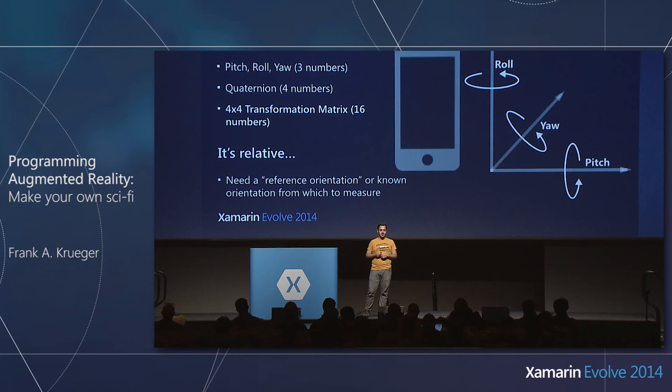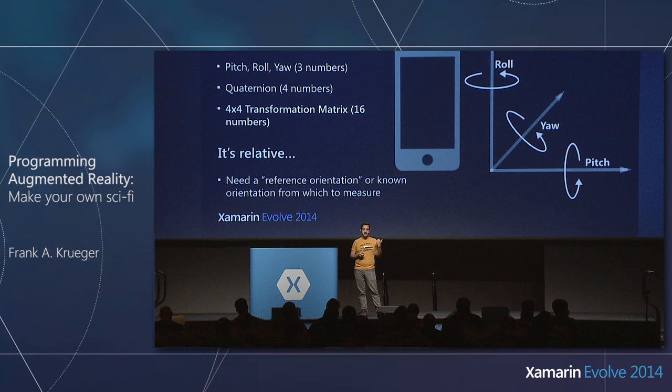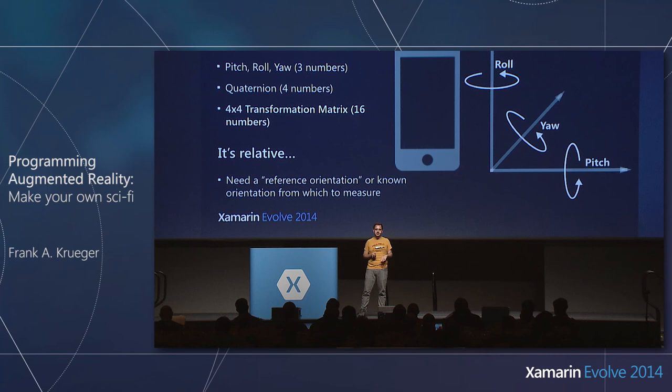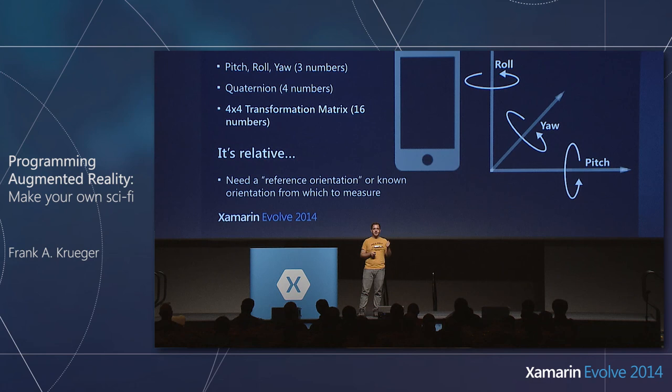Thankfully, iOS introduced Core Motion, which is fantastic. It gets around the accuracy issue by combining not just one sensor but three: the accelerometer, a magnetometer — essentially a metal detector that finds the north pole — and a gyro that gives really nice rotational rates when it's not drifting. If you have an accelerometer, a gyro, and a magnetometer, now we're talking — now we can get actually good orientation data.